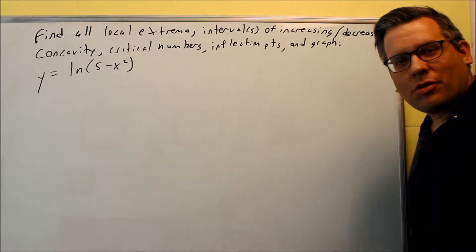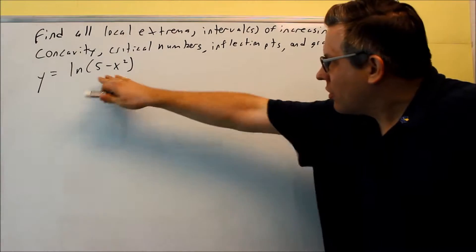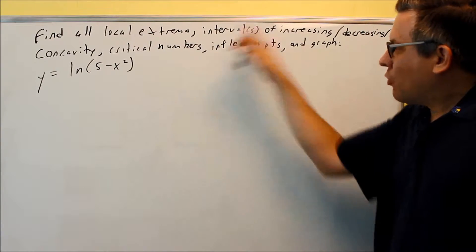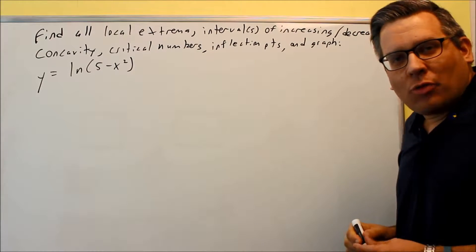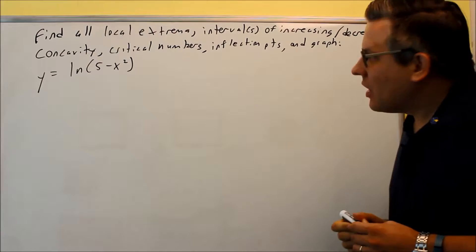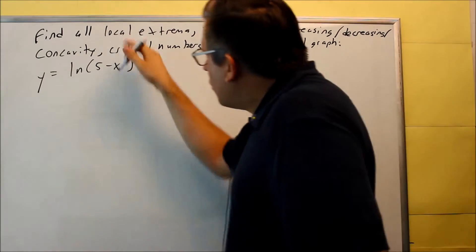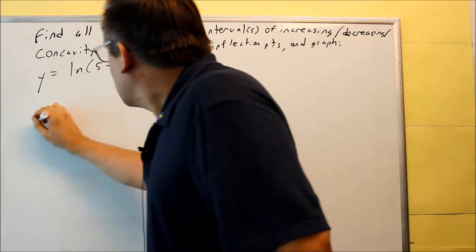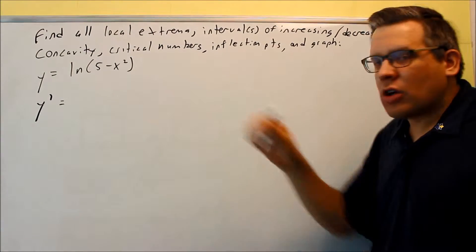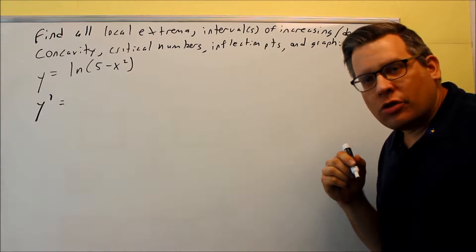We're going to do one more problem that has to do with natural logs. Again, we're finding all the same information. First, we want to find intervals of increase and decrease, critical numbers, and any kind of local extrema. So we need to take the derivative. Since it's a natural log, we want to use the formula u-prime over u.